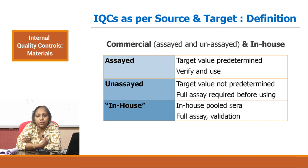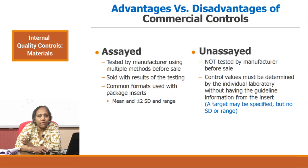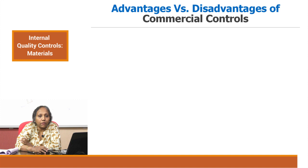Assayed means the target value is predetermined and you only have to verify and use it. Whereas in the case of unassayed controls, target values are not predetermined and a full assay is required before you use it. Let us look at the advantages and disadvantages of commercial controls which are assayed and unassayed in detail.